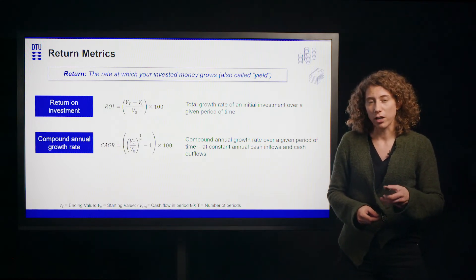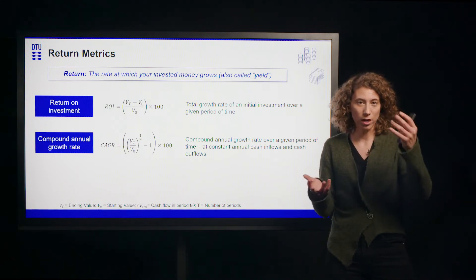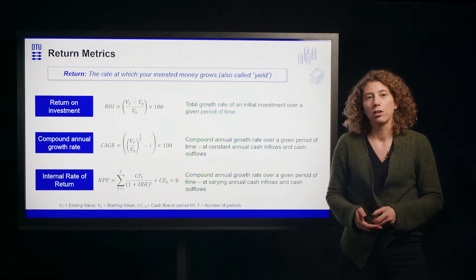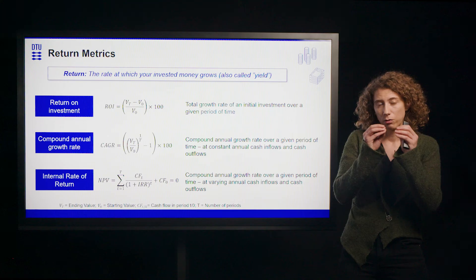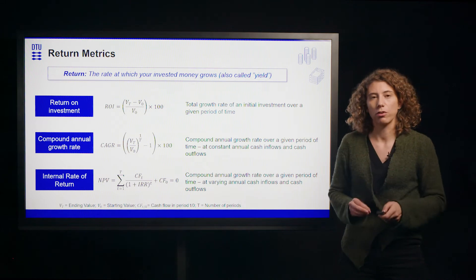If you have a project that has varying production values, for example, or prices, you would turn to the internal rate of return metric, which is the compound annual growth rate over a given period of time at varying annual cash-in and cash-out flows. The internal rate of return gives you the project return rate, the expected return rate.